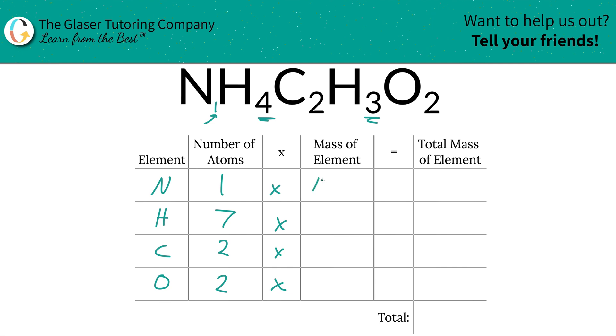Those are the masses we're going to write down. Nitrogen was 14.01, hydrogen was 1.01, carbon was 12.01, and oxygen is 16. And I wrote down 16.01.